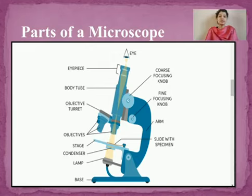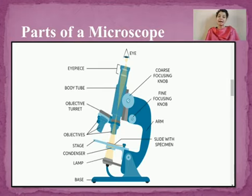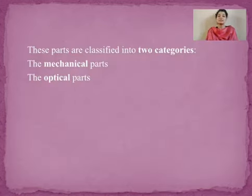Talking about the parts of a compound microscope: it consists of an eyepiece, a body tube, coarse adjustment knob, fine adjustment knob, objective turret where the objective lenses are placed, stage, stage clips, condenser, lamp, and the base. Certain compound microscopes, instead of having a lamp, have mirrors. We will discuss the function of all these parts in the coming slides.